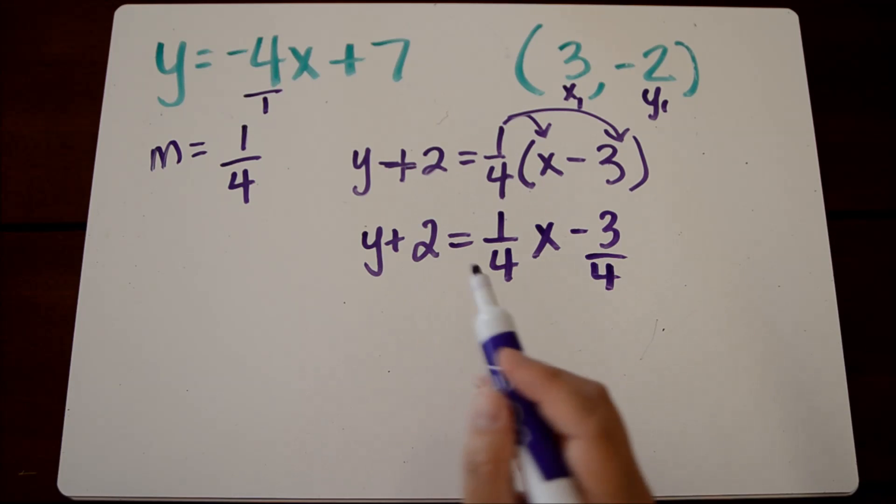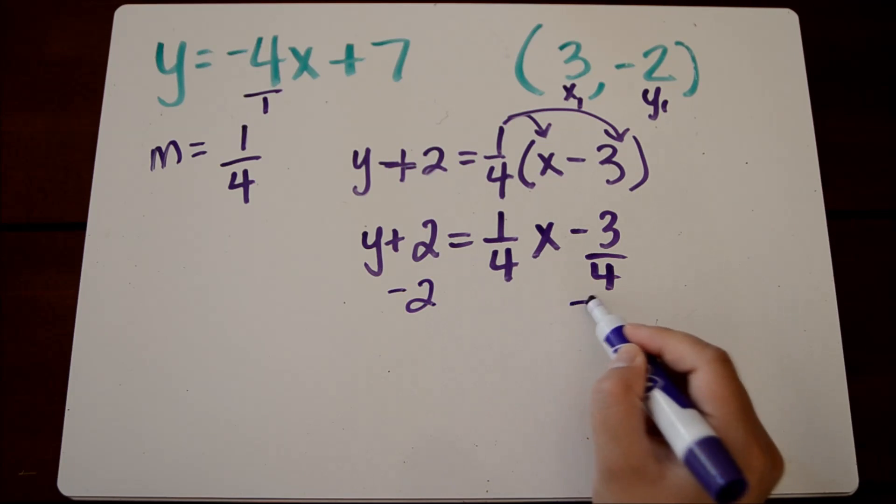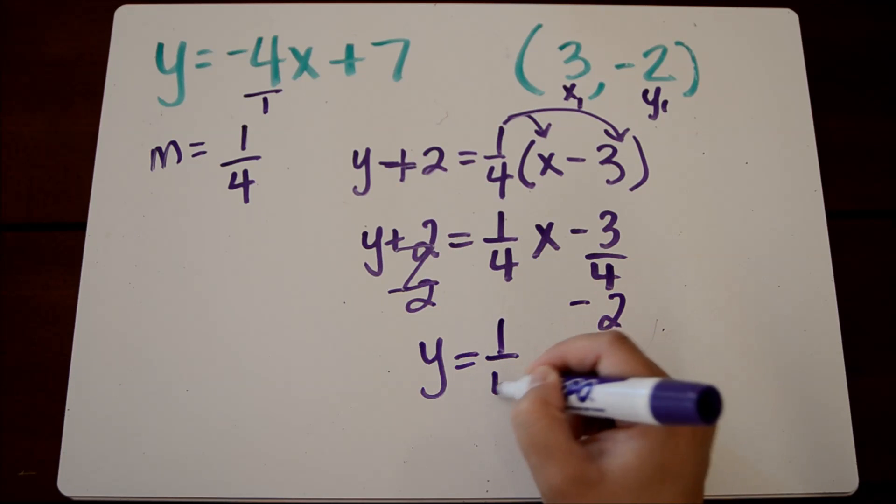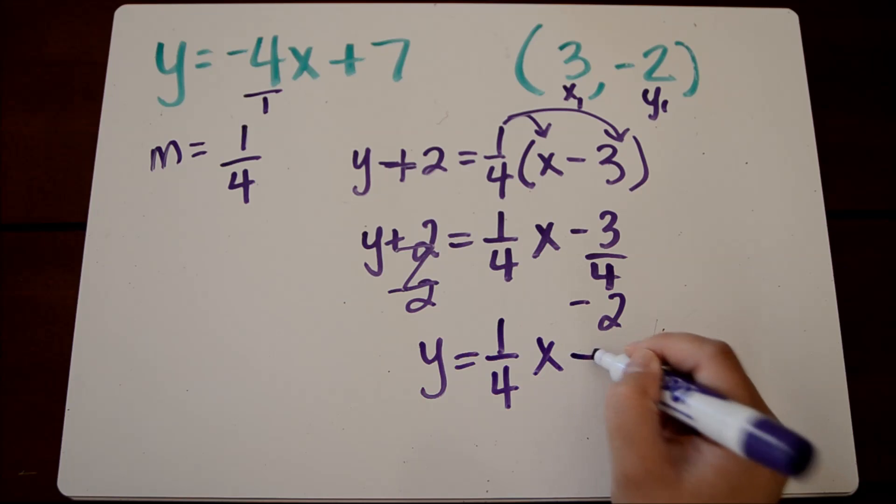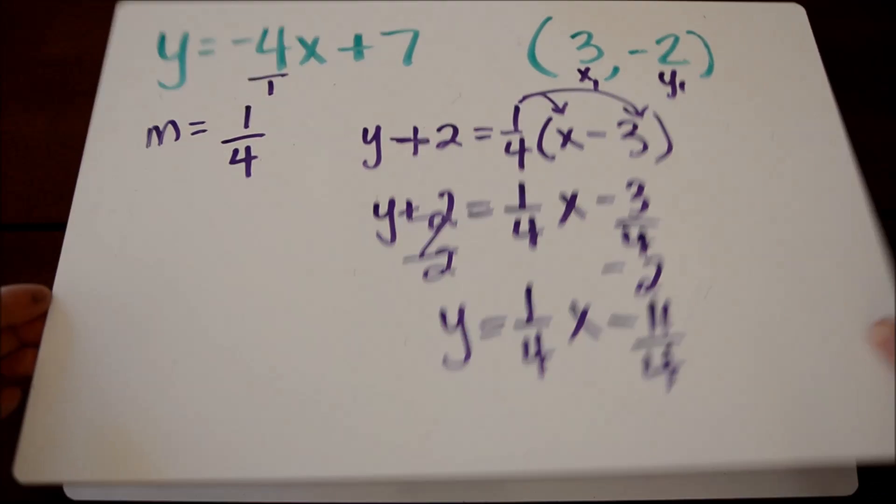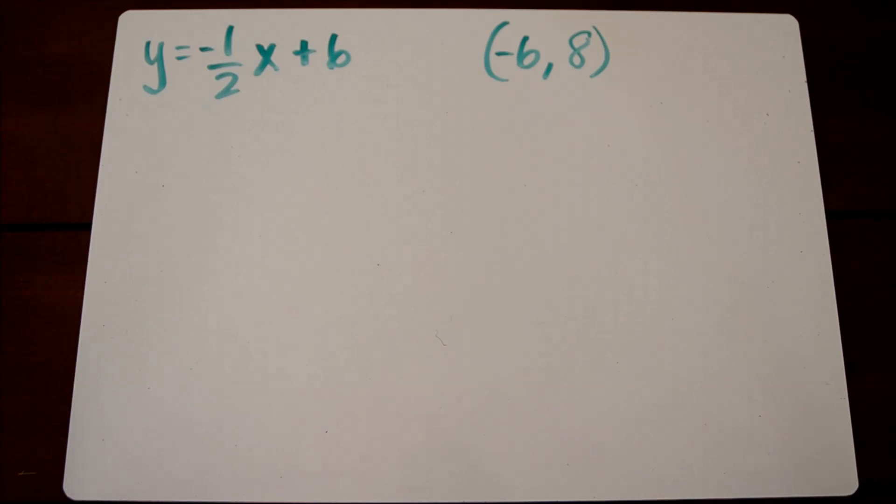And then we're going to solve for y, so we need to get rid of this positive two by applying an inverse operation. And our answer is y equals one-fourth x minus eleven-fourths. And some of our answers might look a little bit messy because we're going to have fractions as our y-intercepts and that's okay.